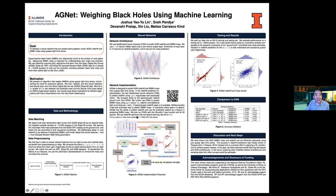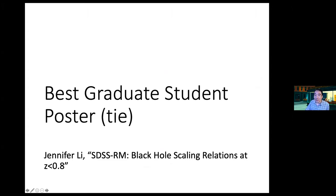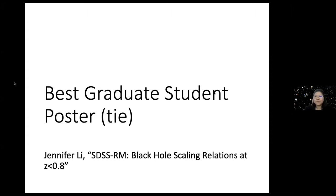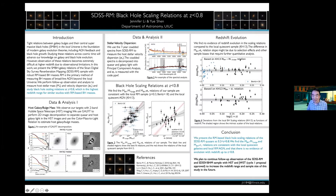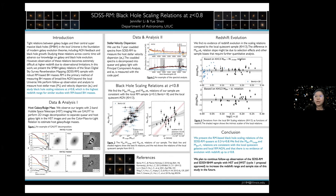In the graduate student category, we have actually a tie. First, Jennifer Lee, who gave us a poster on the SDSS RM project: black hole scaling relations at z less than 0.8. Jennifer, are you here? Yeah, I'm here. So tell us a little bit about your poster. In this poster, I presented our study on the black hole scaling relations on the sample of the SDSS reverberation mapping project. We found really interesting results that the black hole scaling relations at redshift under 0.8 are similar to the local universe, and we're excited to work on this.